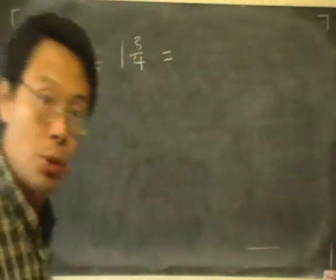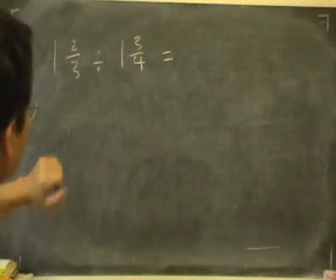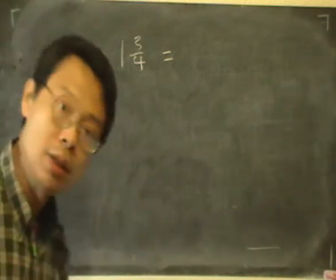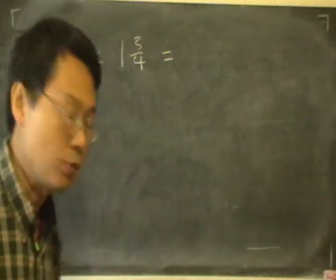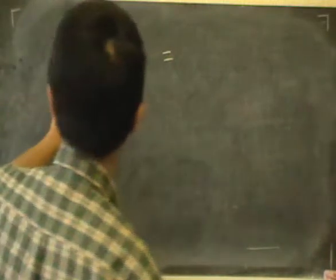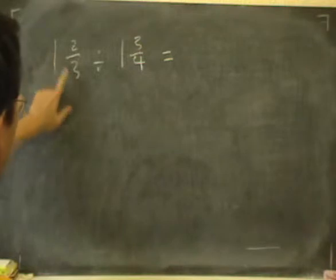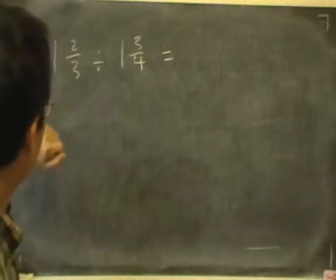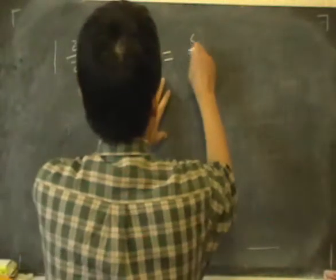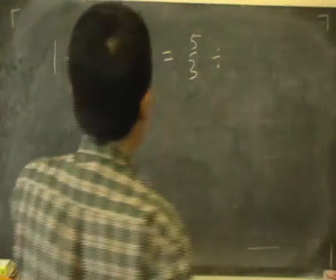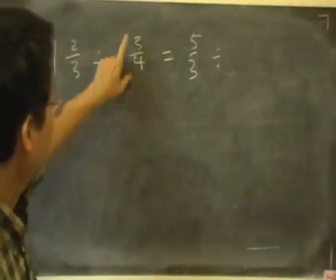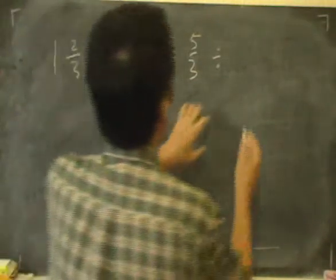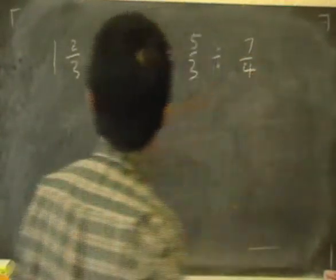The first thing to do is to change these mixed numbers with whole numbers and a fraction next to it into just fractions. So that would be, we start with multiplying the denominator and the 1 there, so that gives 3 times 1 which is 3 plus 2, that's 5, 5 over 3 divided by 1 and 3 quarters. To convert that, we multiply 4 by 1 and then add 3.